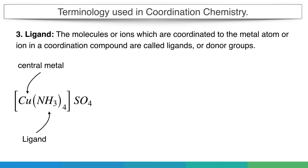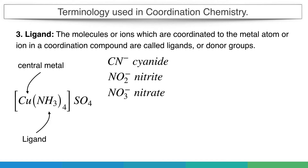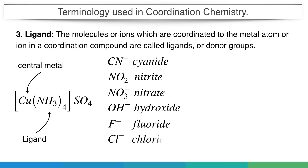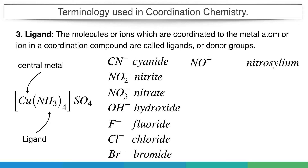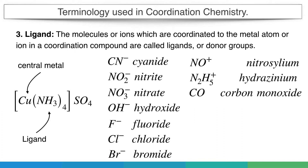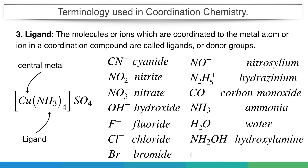Some negative ligands include cyanide, where nitrogen has a lone pair; nitrite, where both nitrogen and oxygen have lone pairs; hydroxide, with oxygen having a lone pair; and fluoride, chloride, and bromide ions, which have extra pairs of electrons from their negative charge. Some positive ligands are nitrosyl ion with nitrogen and oxygen lone pairs, and hydroxylamine with nitrogen lone pairs. Neutral ligands include ammonia, water, hydroxylamine, and methylamine, all with nitrogen or oxygen lone pairs.